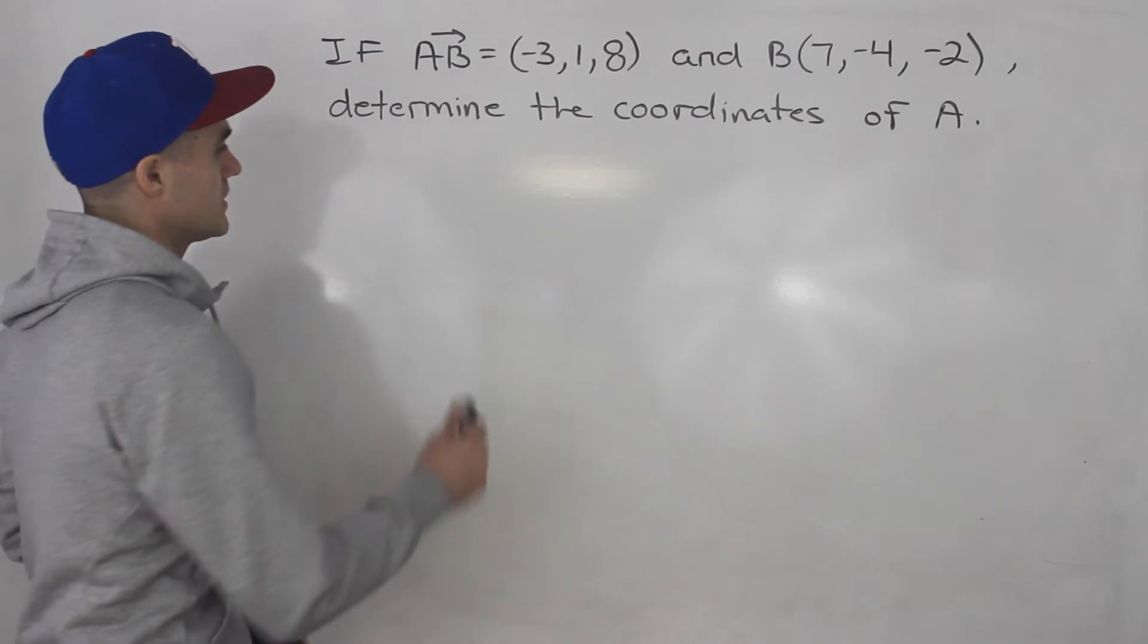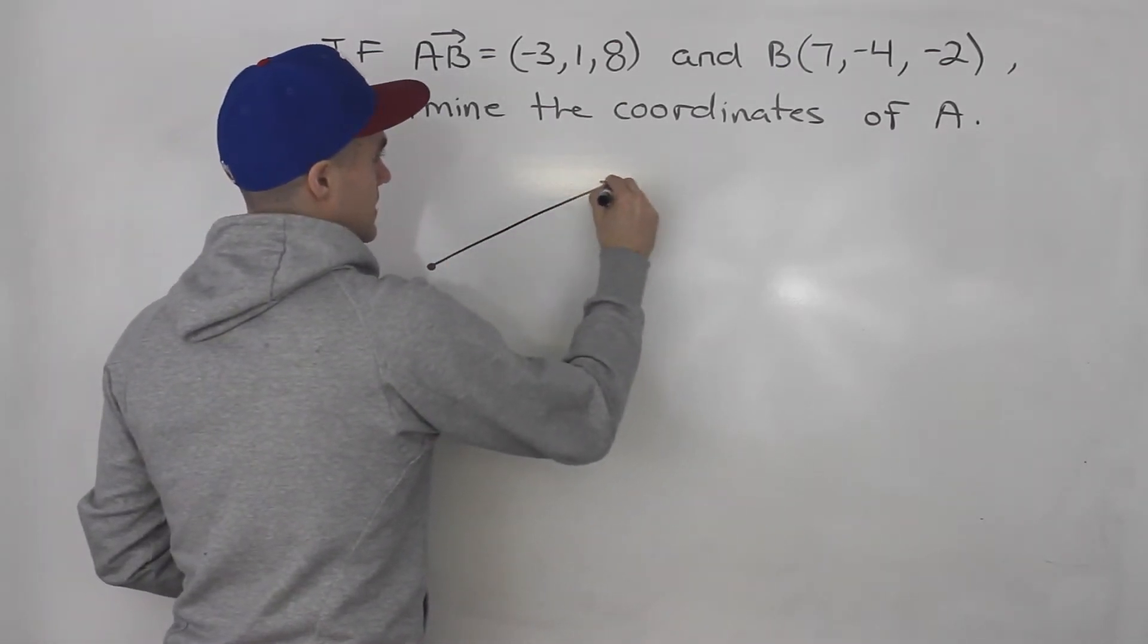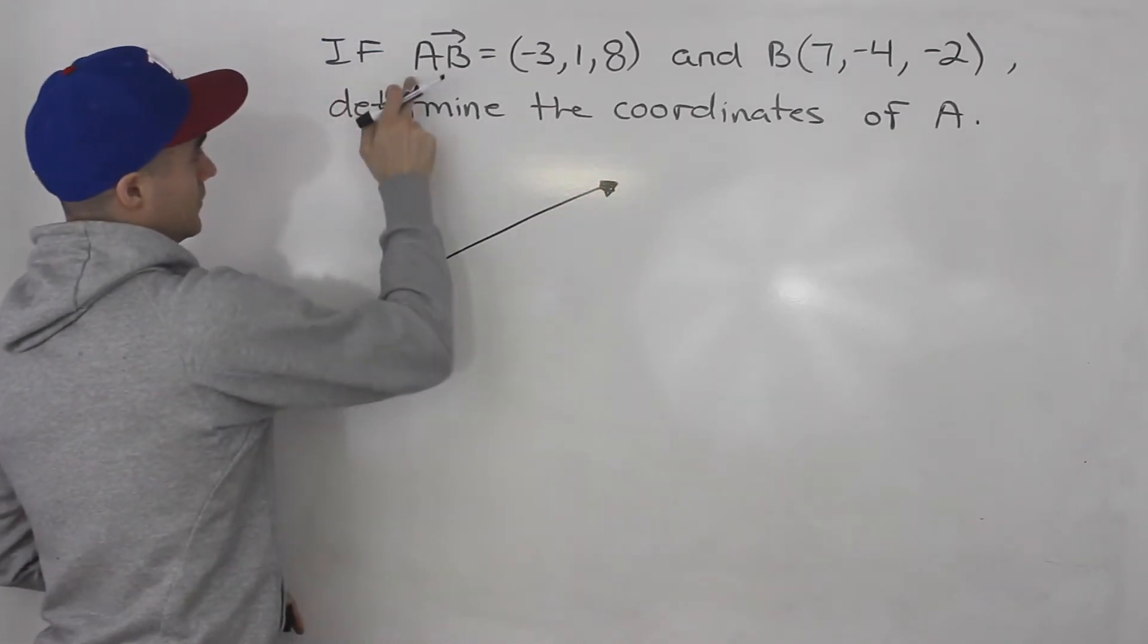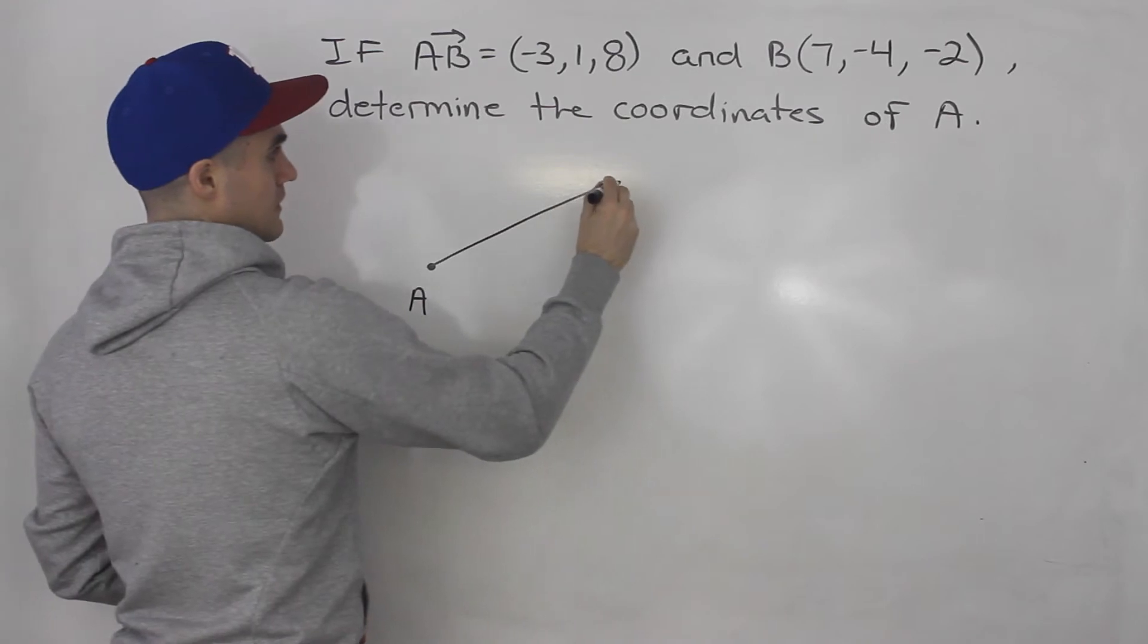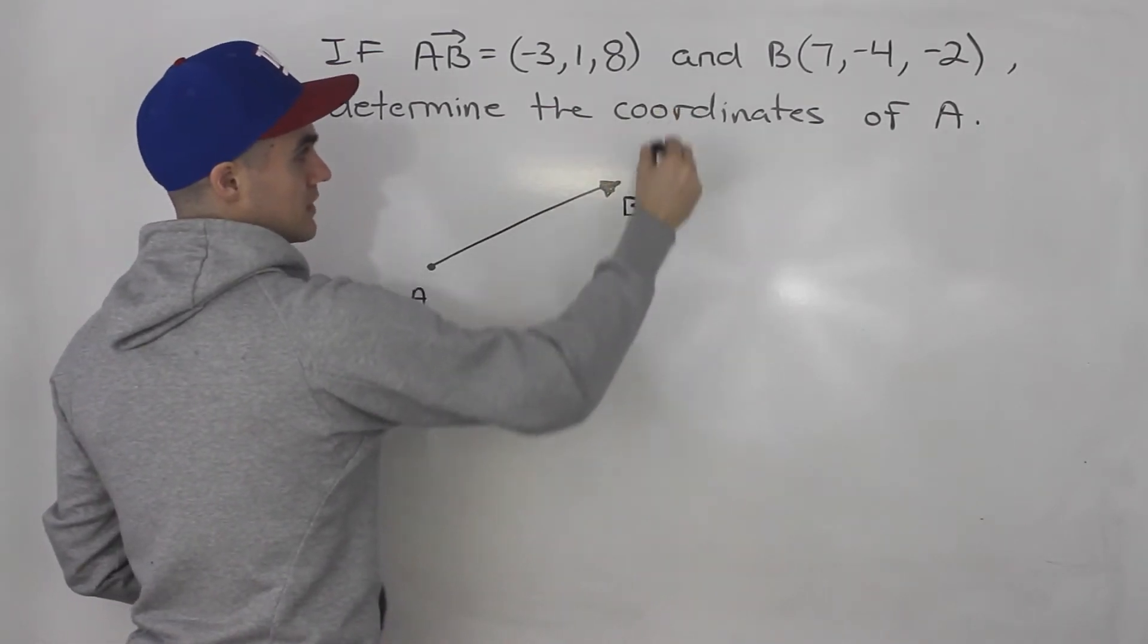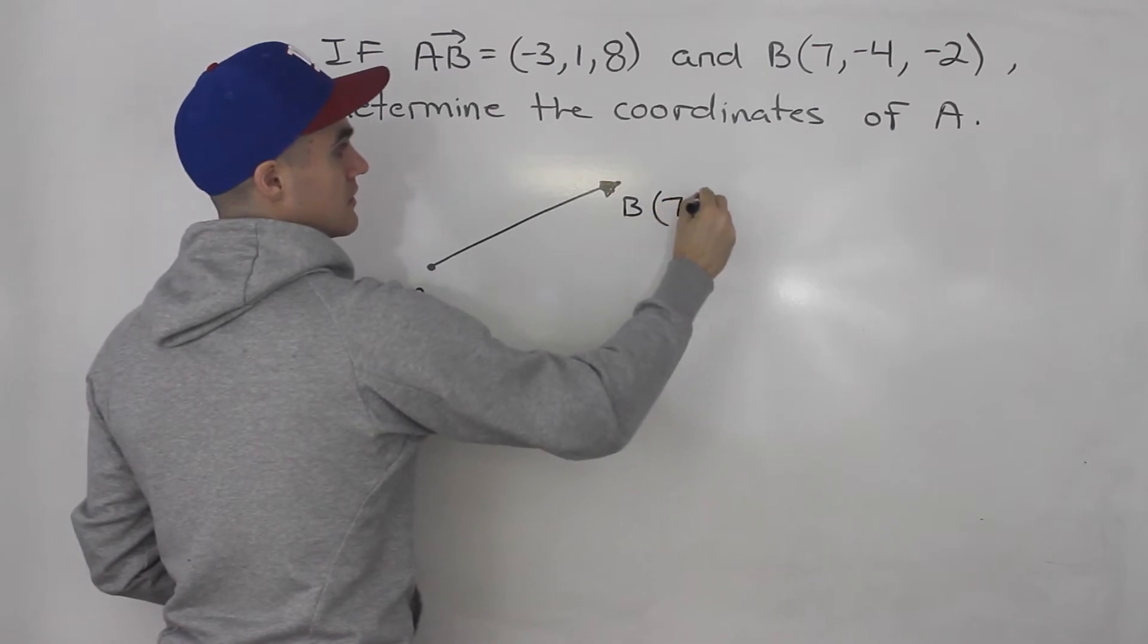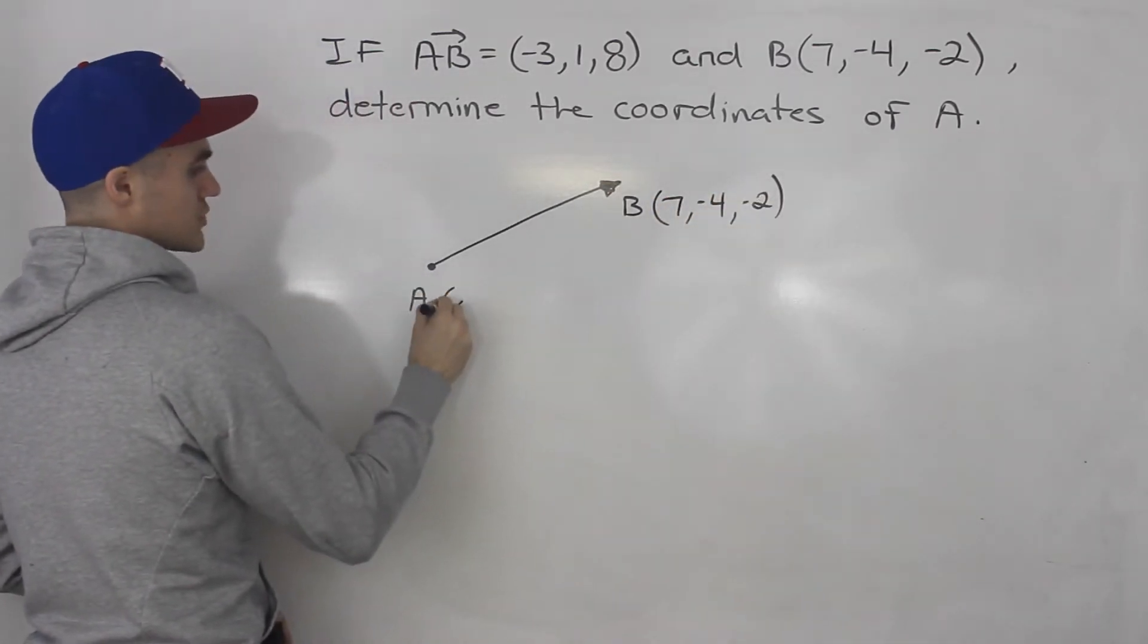Showing this in a diagram, if we draw out this vector AB, say it's like this. Notice that the tail is going to be at coordinate A, then the head is going to be at coordinate B. We know coordinate B is (7, -4, -2), and coordinate A we're actually finding.